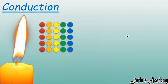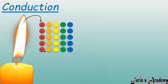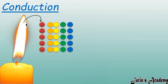In conduction, we take a solid and bring it near heat. The heat energy transfers to the nearby particles. Those particles take heat energy from the burning candle and start vibrating about their fixed position. These vibrations transfer the heat energy to the next particles, which also start vibrating about their mean position.